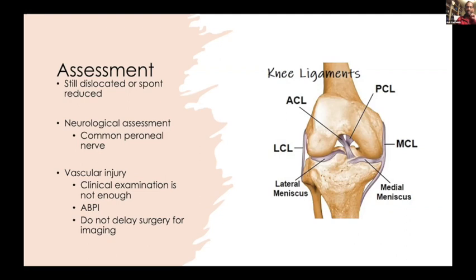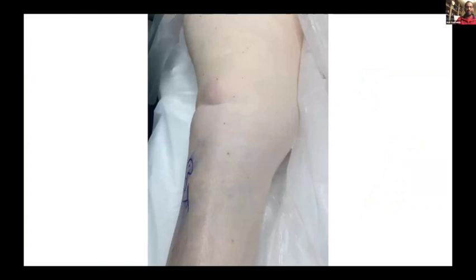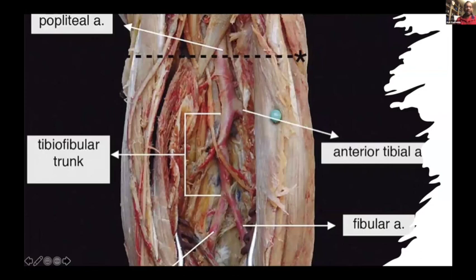Don't delay surgery just for imaging. Another examination finding to know is the dimple sign — where the medial femoral condyle buttonholes through the medial capsule, creating an almost irreducible dislocation. The popliteal artery is at risk because it is intimately related to the back of the knee, surrounded by tendons, muscles, nerves, and veins, and tethered throughout all ranges of motion except deep flexion. Cadaveric studies show the artery is almost tethered directly to the back of the proximal tibia, making it at high risk of injury.